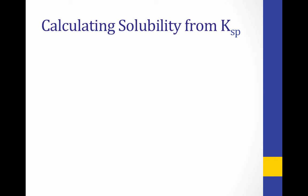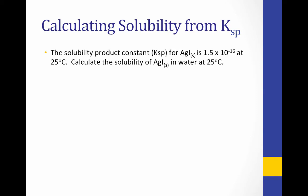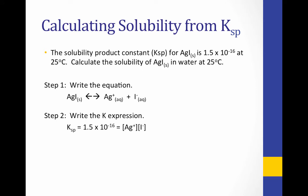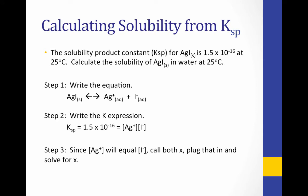We can also go the other direction and use KSP to solve for solubility. Here we are given the KSP of silver iodide and asked for its solubility. Again, start by writing the dissociation equation and then the K expression. Since we know the K value, we fill in KSP = 1.5 × 10⁻¹⁶. Since the concentrations of Ag⁺ and I⁻ will be equal in a one-to-one ratio, we call them both x and plug x in as our concentrations. Therefore, 1.5 × 10⁻¹⁶ equals x times x, or x².